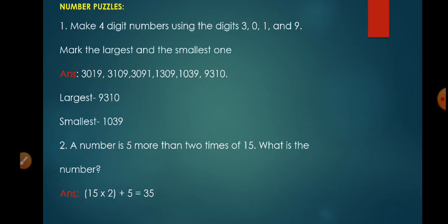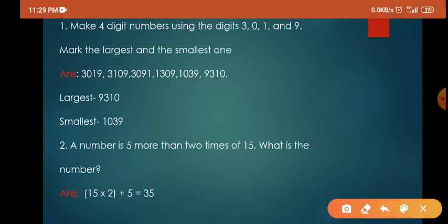Now we have to find the smallest one. For the smallest number, we arrange the digits in ascending order — meaning increasing order. Ascending means increasing: 1, 2, 3, 4, 5, 6... and descending means decreasing: 9, 8, 7, 6, 5, 4, 3, 2, 1. So for the smallest number, arrange the digits in increasing order: the smallest digit is 0, then 1, then 3, then 9, giving 0139.